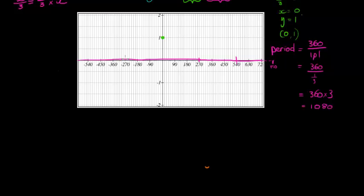810 would be somewhere here. That would be my third position. Same in the negative direction. Negative 270, negative 540, negative 810. Now I know that when I start here, I must reach the center line at my first point, my minimum at the next point, and back at my center line at that point.